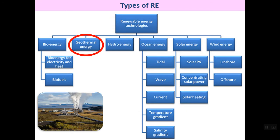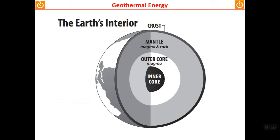The next source of renewable energy is geothermal energy, which is energy from the earth. This picture shows a cross-section of the earth's interior: there is the crust, then the mantle which is magma and rock, the outer core which includes magma, and the inner core.